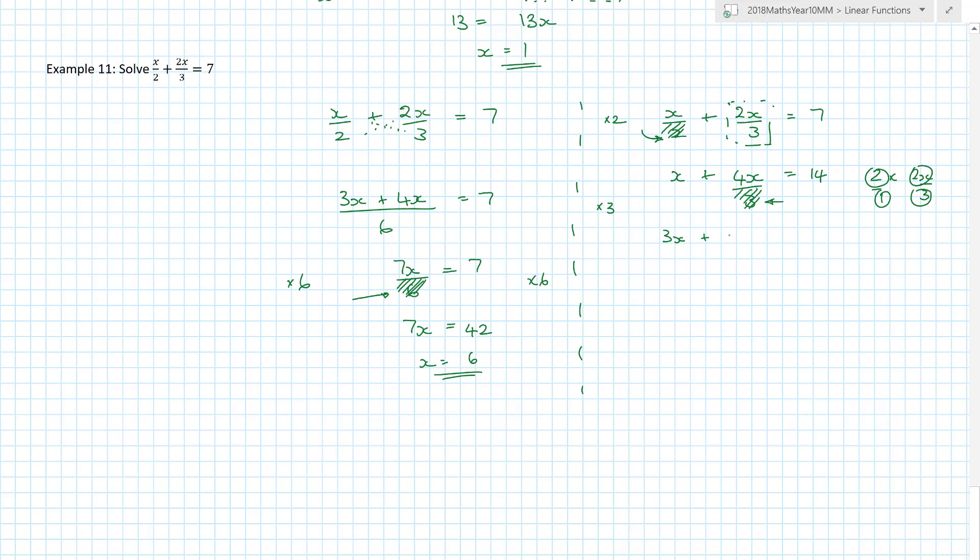That's got rid of one fraction. What do you reckon I'm now going to do? I'm going to get rid of my next fraction. That's a divide by 3, so I'm going to times everything by 3. 3 times x is 3x plus 4x equals 3 lots of 14, which is 42. 7x equals 42, and so x becomes equal to 6.